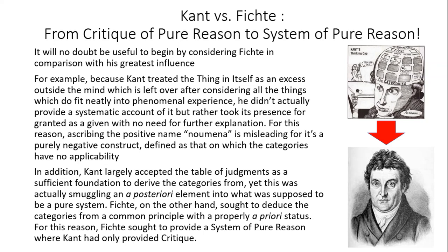For this reason, Fichte warned that even ascribing the positive name 'noumena' to this is inherently misleading, for Kant gives us a purely negative construct — defined only as that on which the categories have no applicability. In addition, Fichte argued that Kant largely accepted the table of judgments as a sufficient foundation to derive the categories from, simply deducing the pure concepts like substance, cause and effect from the valid forms of judgment within logic. Yet Fichte found this unsatisfactory because that's actually smuggling an a posteriori element into what is supposed to be a pure system.